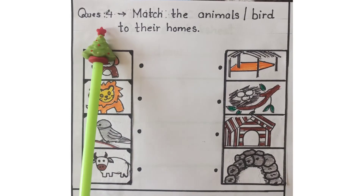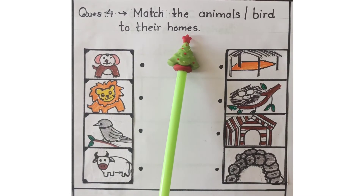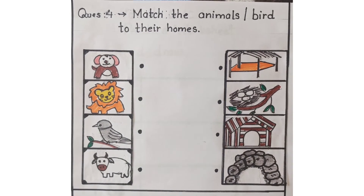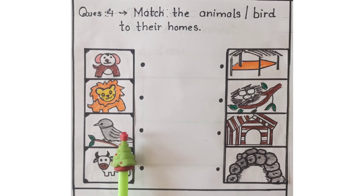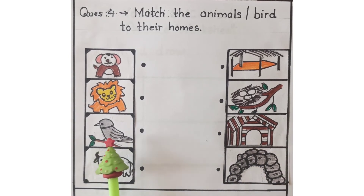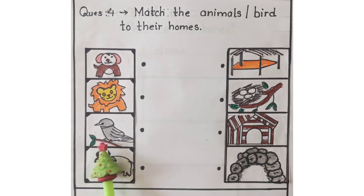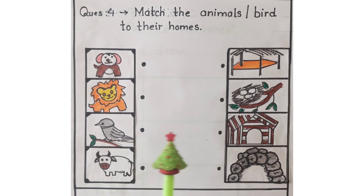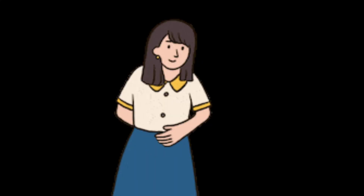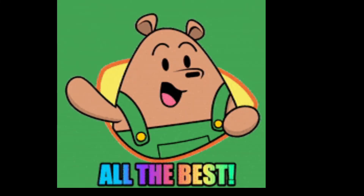Now let's read question number 4: Match the animals or birds to their homes. This is your favorite question — matching. You have to reach the right home to the animals and birds. You have to join animals or birds to their homes by connecting a line. That's all for today children. This is how you have to complete EVS FA2 worksheets. All the best, have a wonderful day.